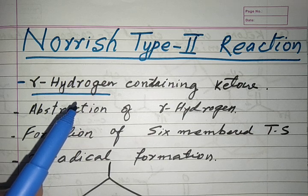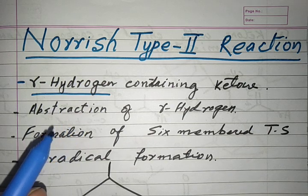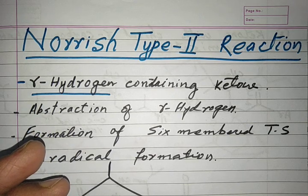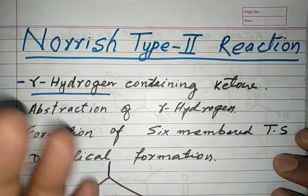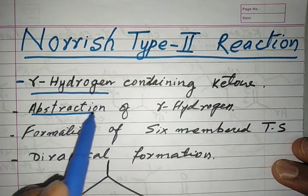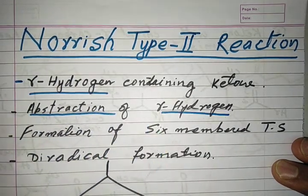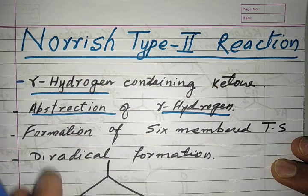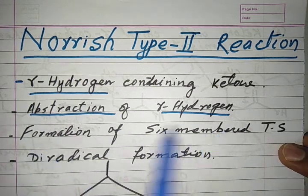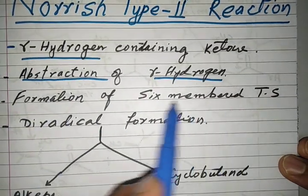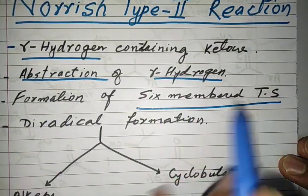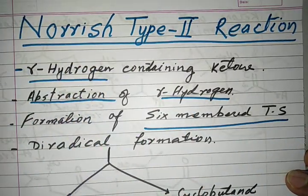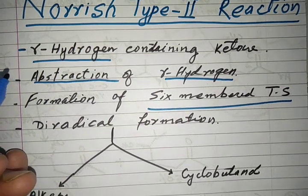When such ketones with gamma hydrogen are irradiated with UV or visible light, they absorb the radiation, get excited to the singlet state, intersystem crossing takes place, and the molecule goes to the triplet state. From there, there is abstraction of the gamma hydrogen by the carbonyl oxygen through homolytic cleavage, via a very stable six-membered transition state.